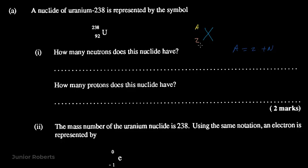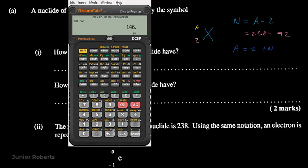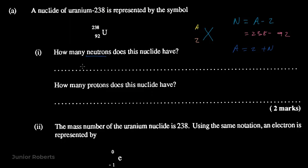We want to find the number of neutrons, so we rearrange the equation: N = A − Z. In this case, A is 238 and Z is 92, so we have 238 − 92. Using a calculator, 238 − 92 gives us 146. Therefore the number of neutrons N = 146.